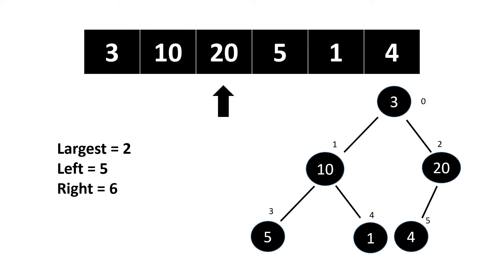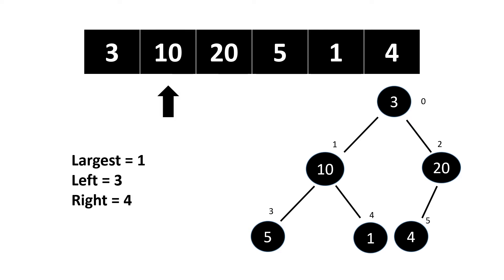We move the pointer from index two to index one. Now largest becomes index one, left becomes index three, and right becomes index four. We check if the element at index three is greater than the element at index one — five is not greater than ten. Then we check if the element at index four is greater than index three — that is also not the case, so no operations are needed.